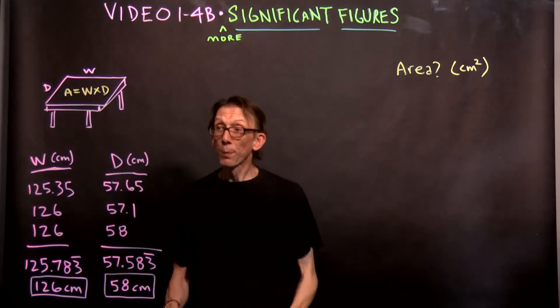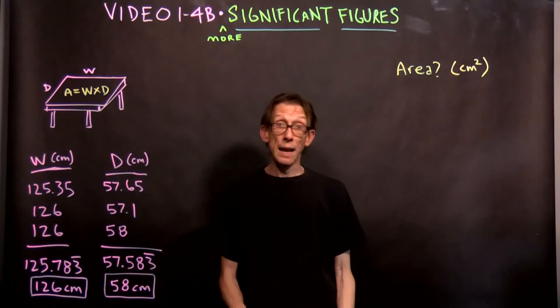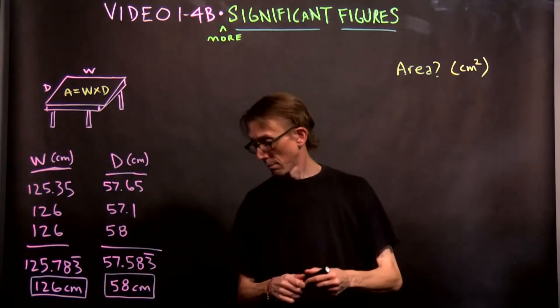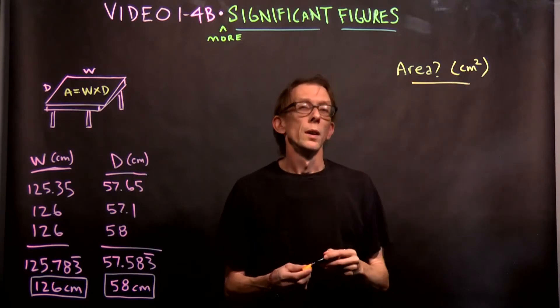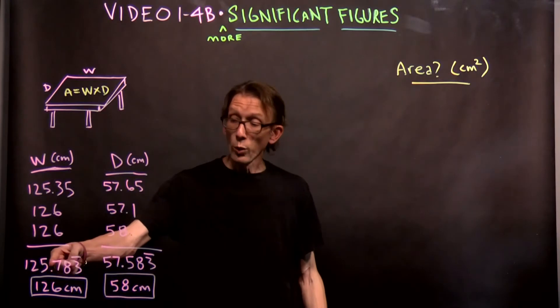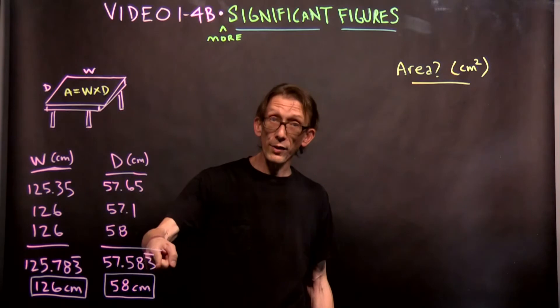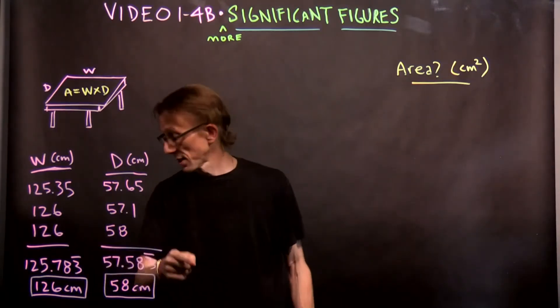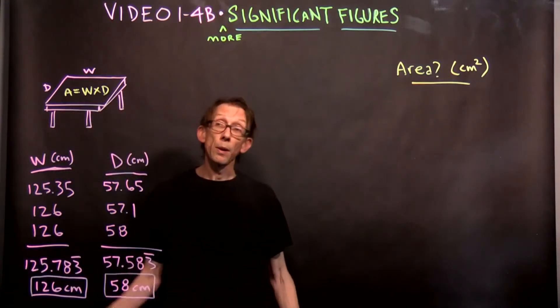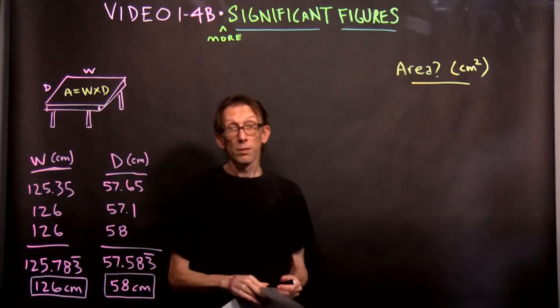So what do you do? Well, you multiply the width times the depth. Right? And there you got it. That's the answer to the area. But, here comes the tricky business. There goes my stick. Do we, dear student, do we multiply 125.783333 times 57.583333? Or do we multiply 126 by 58? Which width, which area, I mean, which width and which depth do we use to find the area? Does it matter? Let's find out.